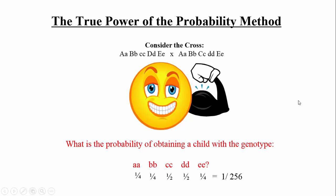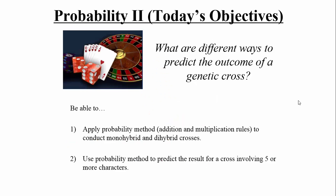That's the probability two lecture. We covered how to apply addition and multiplication rules to dihybrid crosses, how to use them simultaneously, the branching method for multi-gene crosses, and the probability method for crosses involving five or more genes.